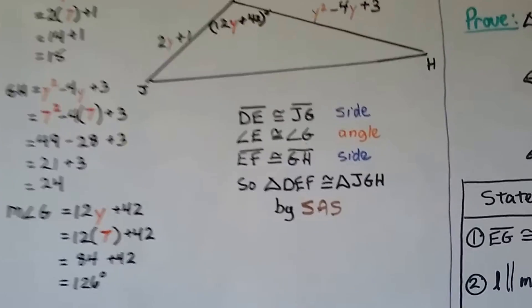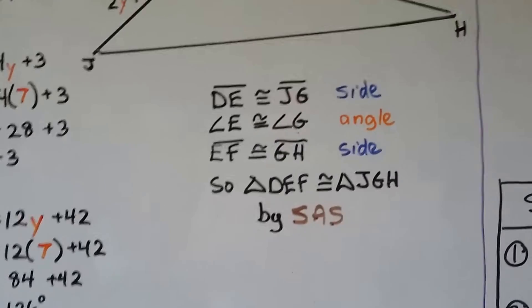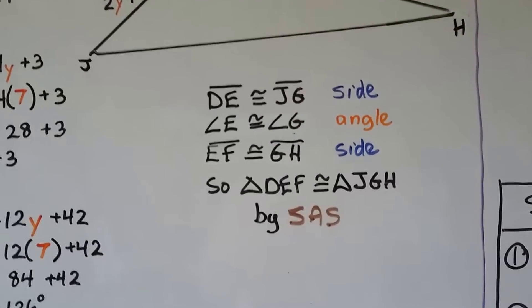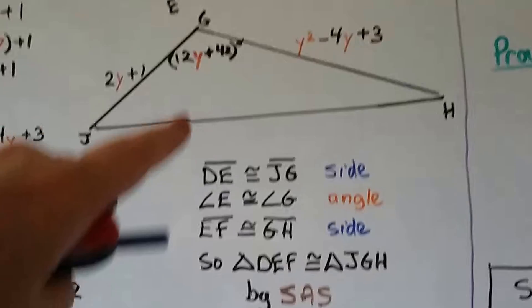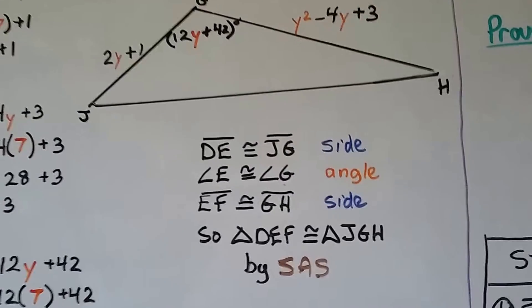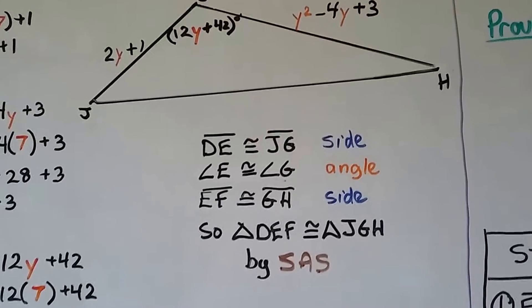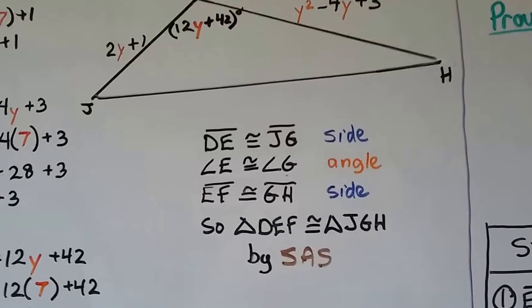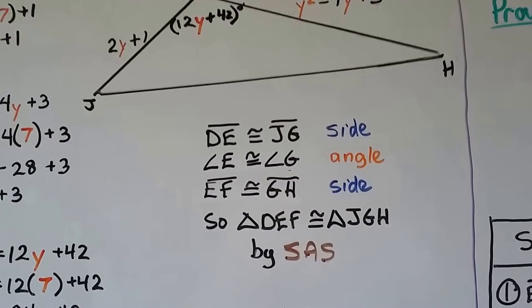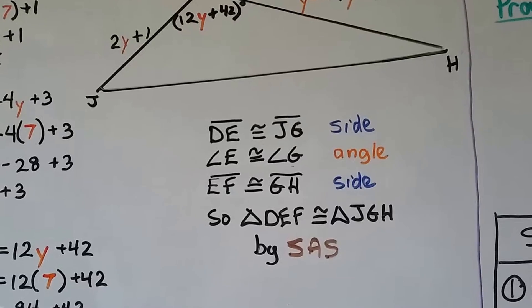So segment DE is congruent to segment JG, that's a side. Angle E is congruent to angle G, that's an angle. And segment EF is congruent to segment GH, that's a side. So triangle DEF is congruent to triangle JGH by side angle side.